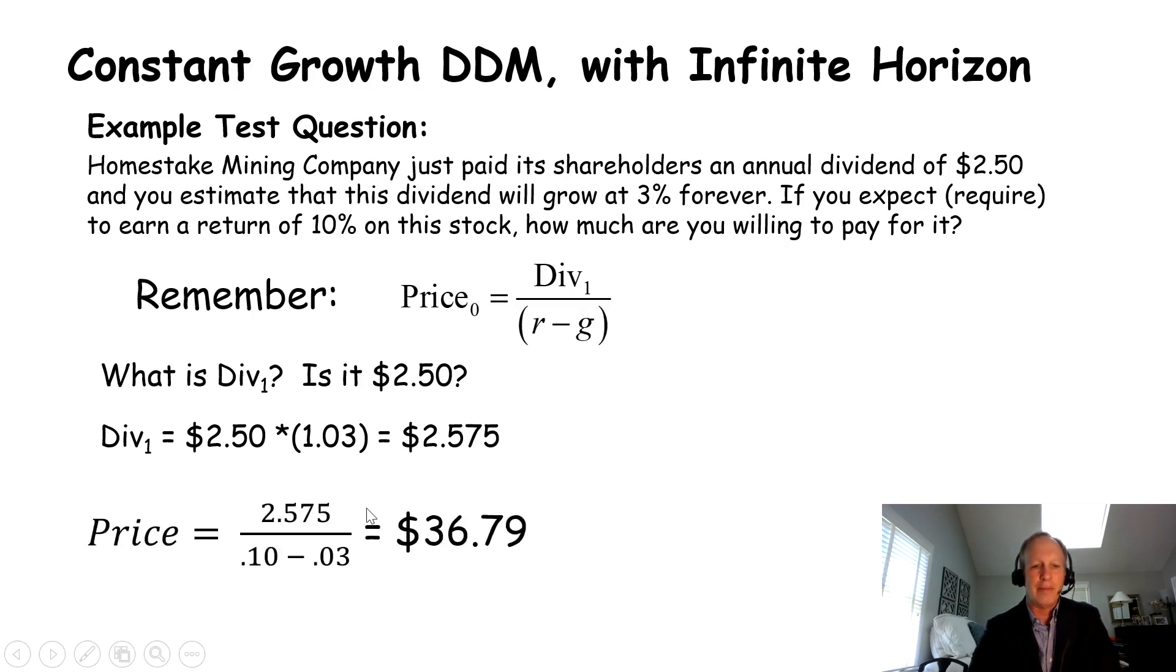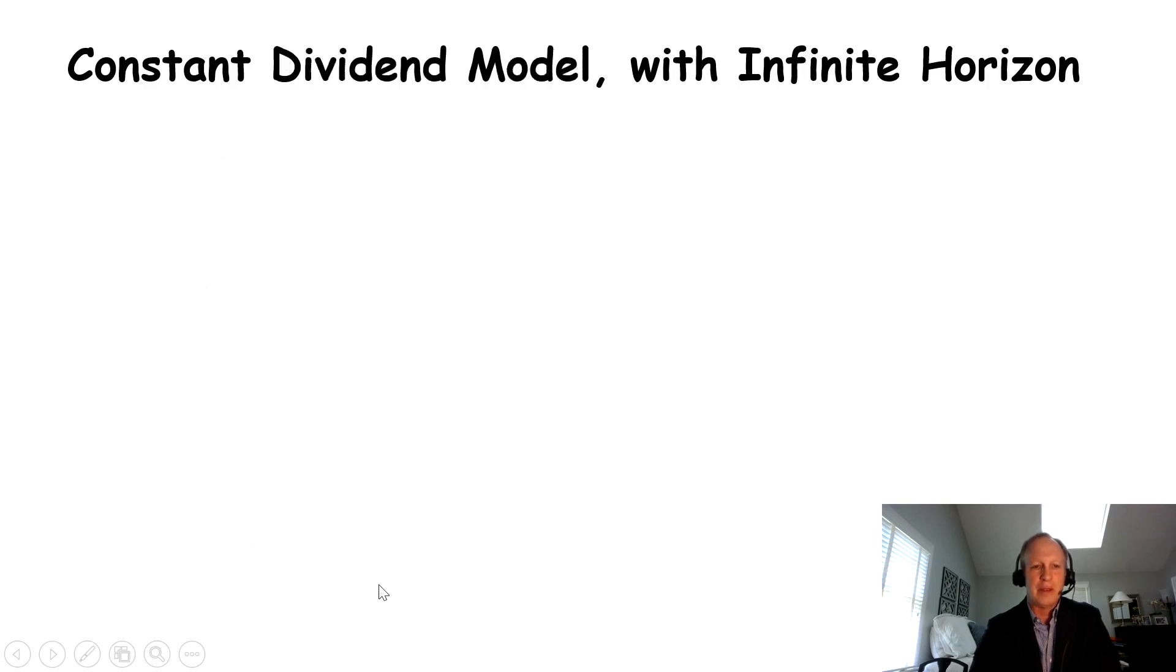So that's our numerator. And then we're going to put R minus G in the denominator, 0.1 minus 0.03, because that's our discount rate and that is our growth rate, R minus G. And you get 36.79. Another thing you need to note is that R has to be greater than G. If it's not, this equation doesn't work.